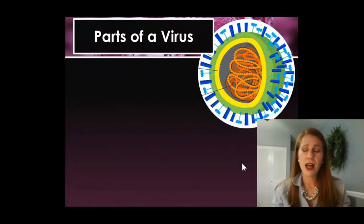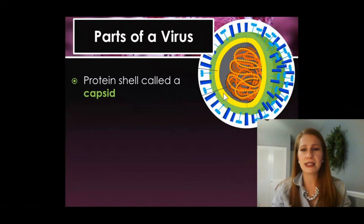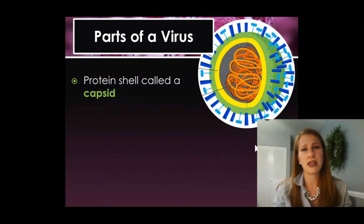We have parts of a virus that we're going to go over here briefly. There are four that we're going to talk about today. The first is the protein shell called a capsid, and that is this yellow region you see here. It looks kind of like a cell membrane, but this is not a cell. So instead, it's just a protein coating that's there to protect what's on the inside, which is also similar to our cells.